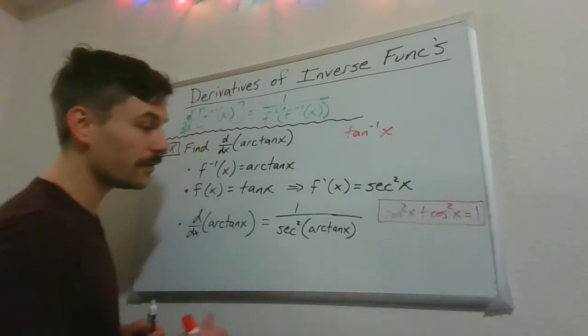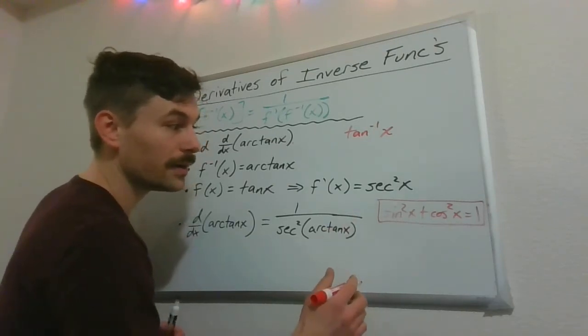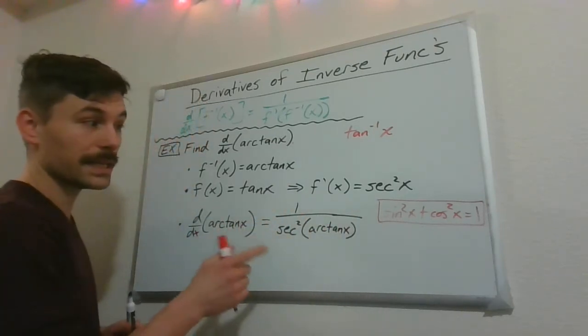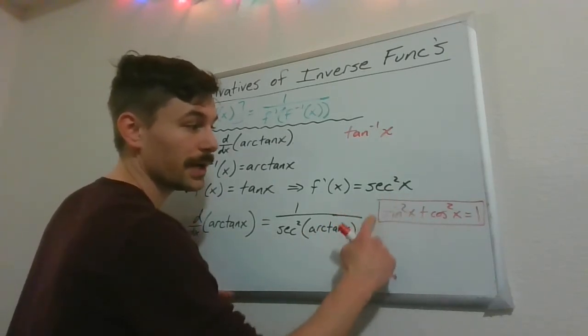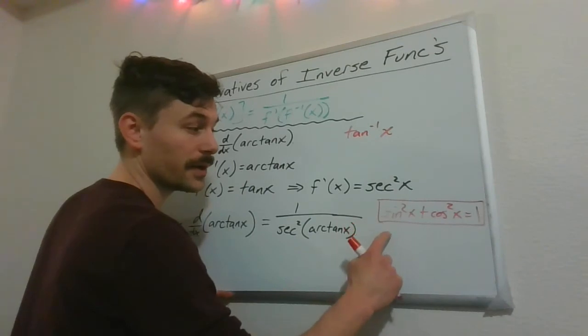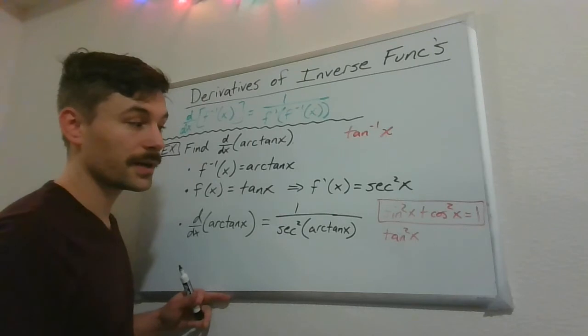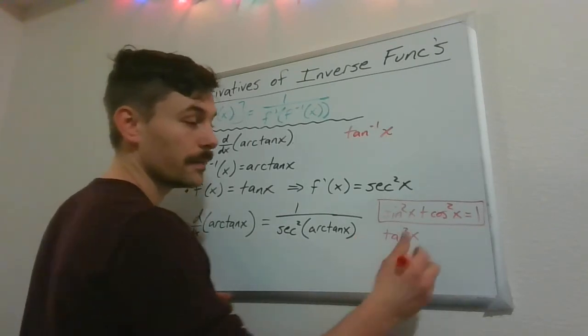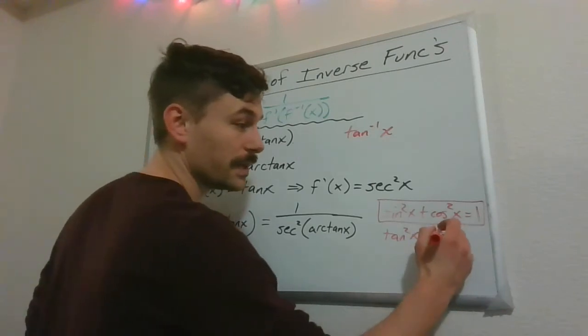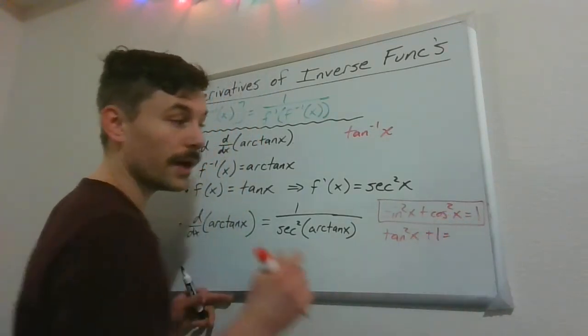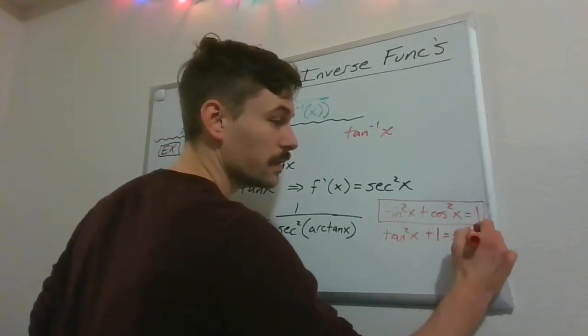But if we divide everything through by cosine squared, then we can get a new identity that deals with different functions. So divide the first part by cosine squared. So sine over cosine is tangent, but I've got sine squared over cosine squared. So tangent squared plus, cosine squared divided by itself, that's just going to be 1. And then 1 divided by cosine squared, that's going to be secant squared.